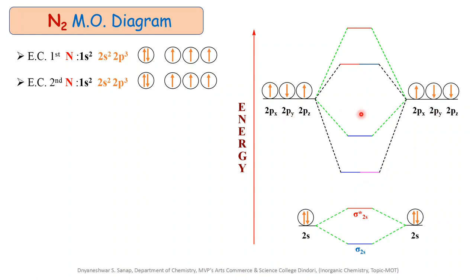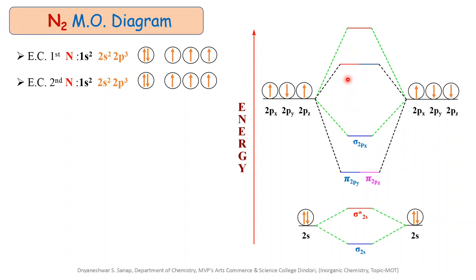Similarly, when the 2p atomic orbitals combine together, they produce 6 molecular orbitals. Out of these 6 molecular orbitals, 3 are bonding molecular orbitals and 3 are anti-bonding molecular orbitals. The lower-energy bonding molecular orbitals produced by combination of 2p atomic orbitals are called pi-2py and pi-2pz molecular orbitals, and the higher-energy sigma molecular orbital produced by the combination of 2p atomic orbitals is known as sigma-2px bonding molecular orbital. Their corresponding anti-bonding molecular orbitals are pi-star-2py and pi-star-2pz at the degenerate level, and higher-energy sigma-star-2px anti-bonding molecular orbital.